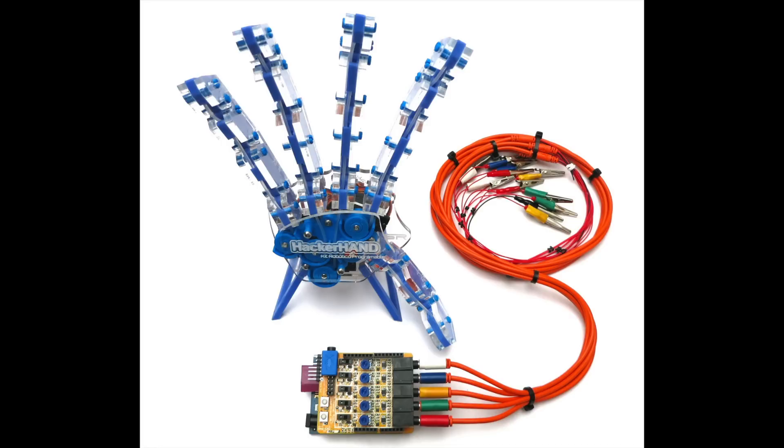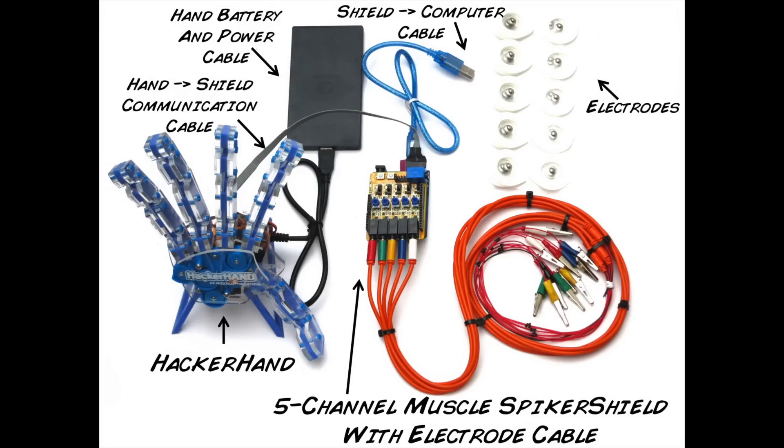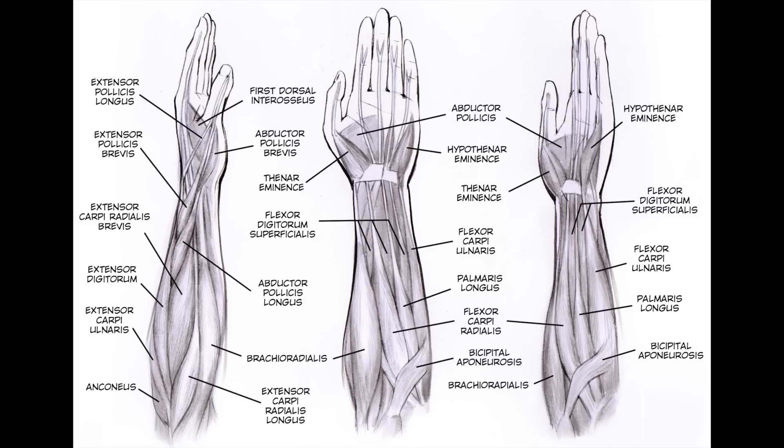The multi-channel EMG spiker shield contains five separate EMG channels. Likewise, the hacker hand contains five fingers that are each individually controllable. But as we all know, the hand is an exquisite instrument capable of many fine movements, controlled by many different muscles.